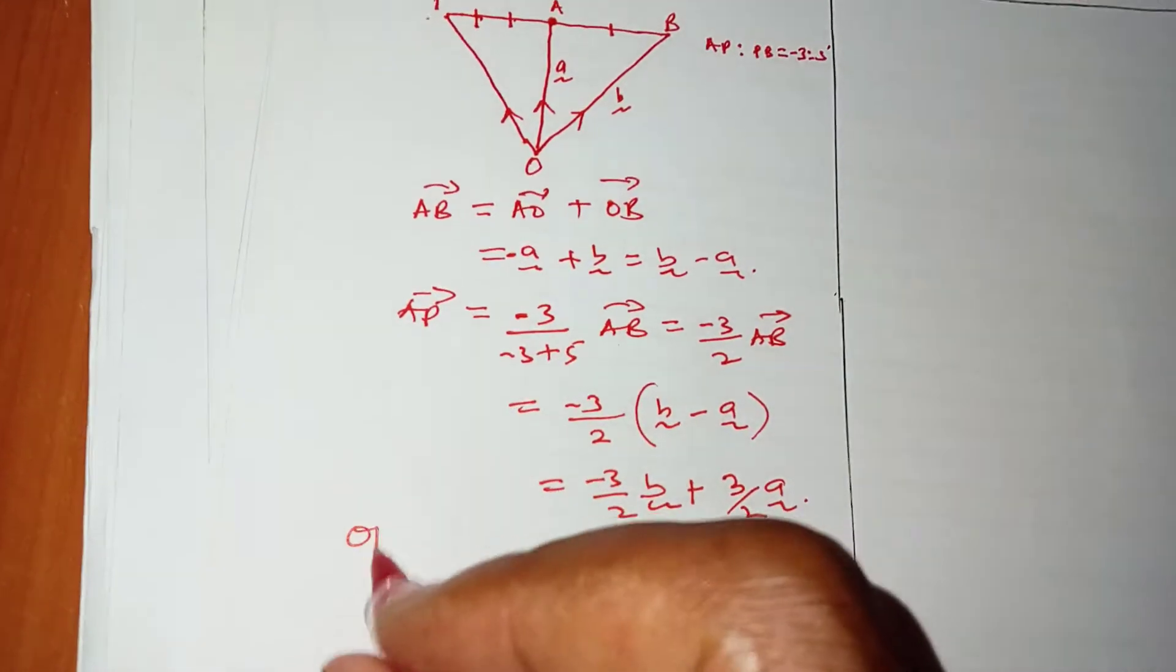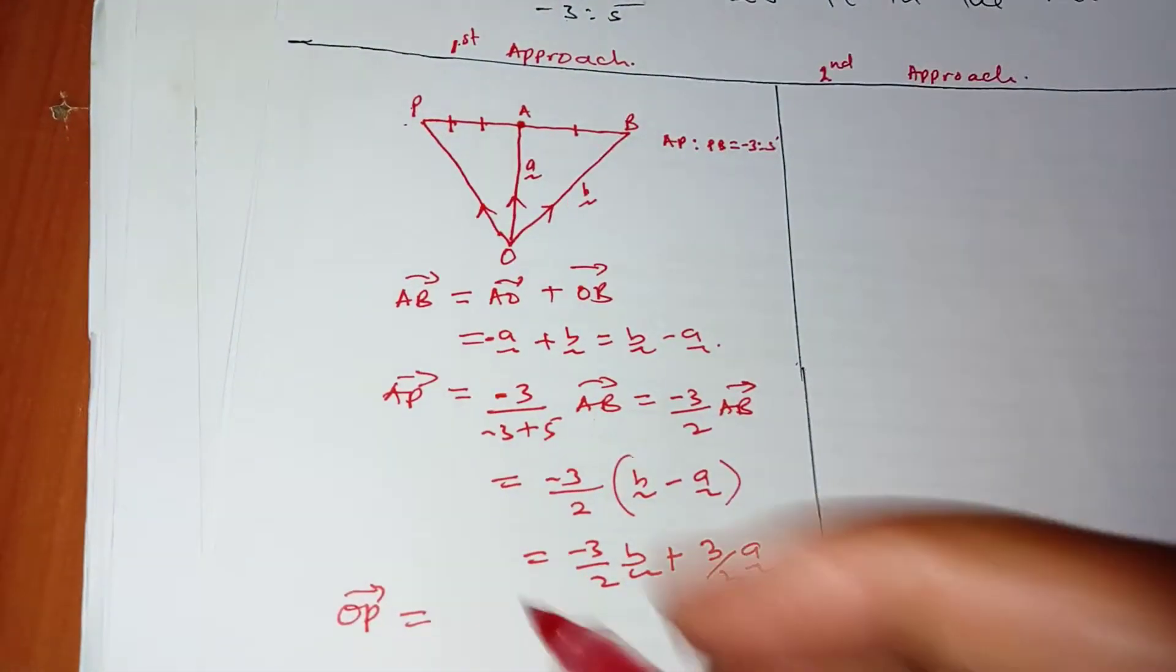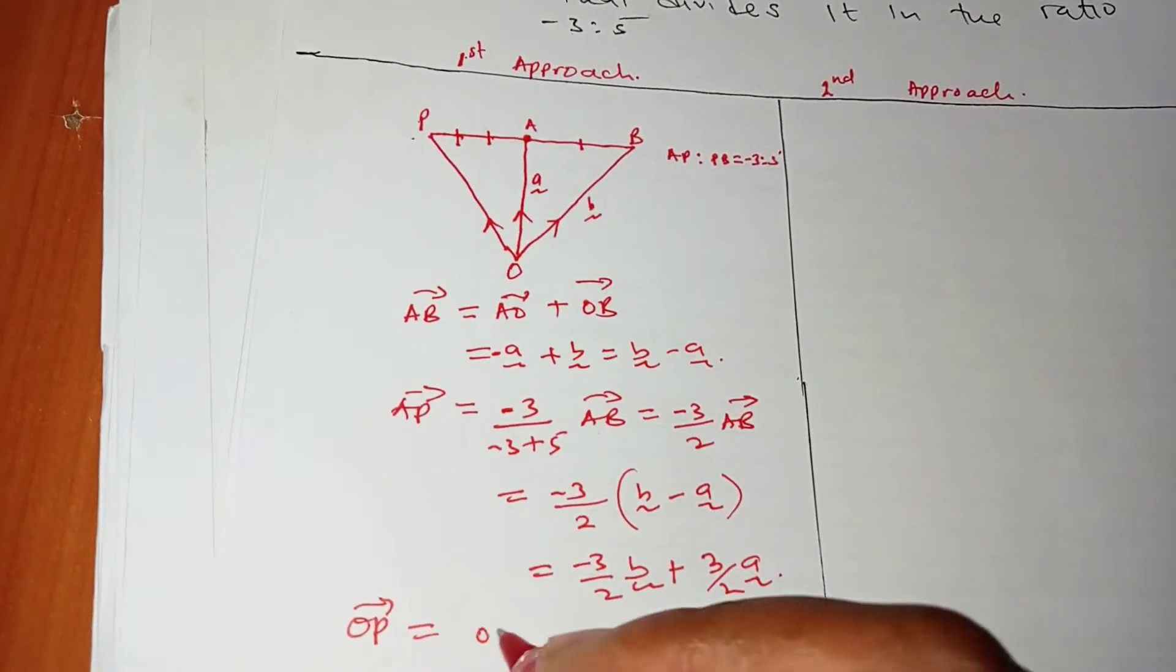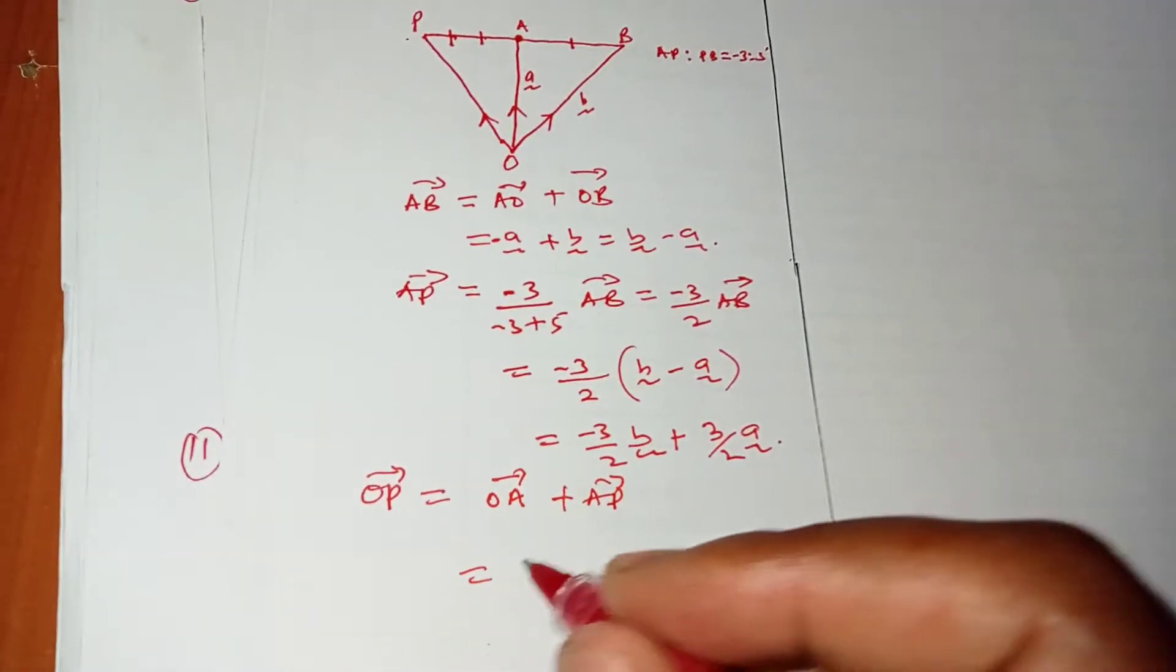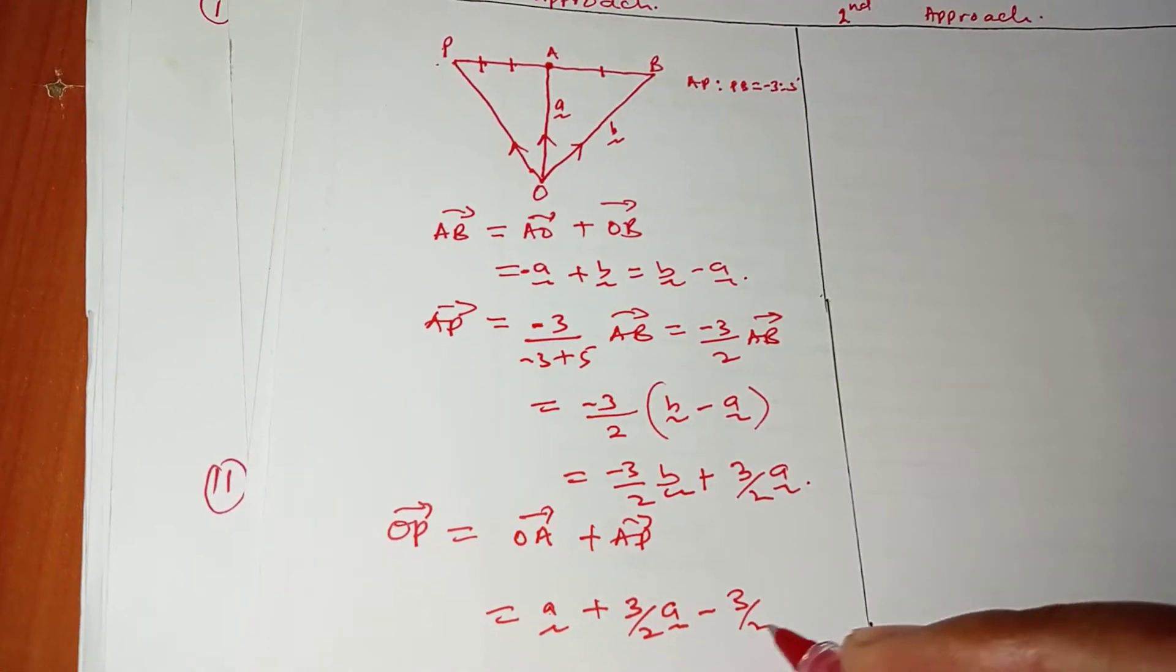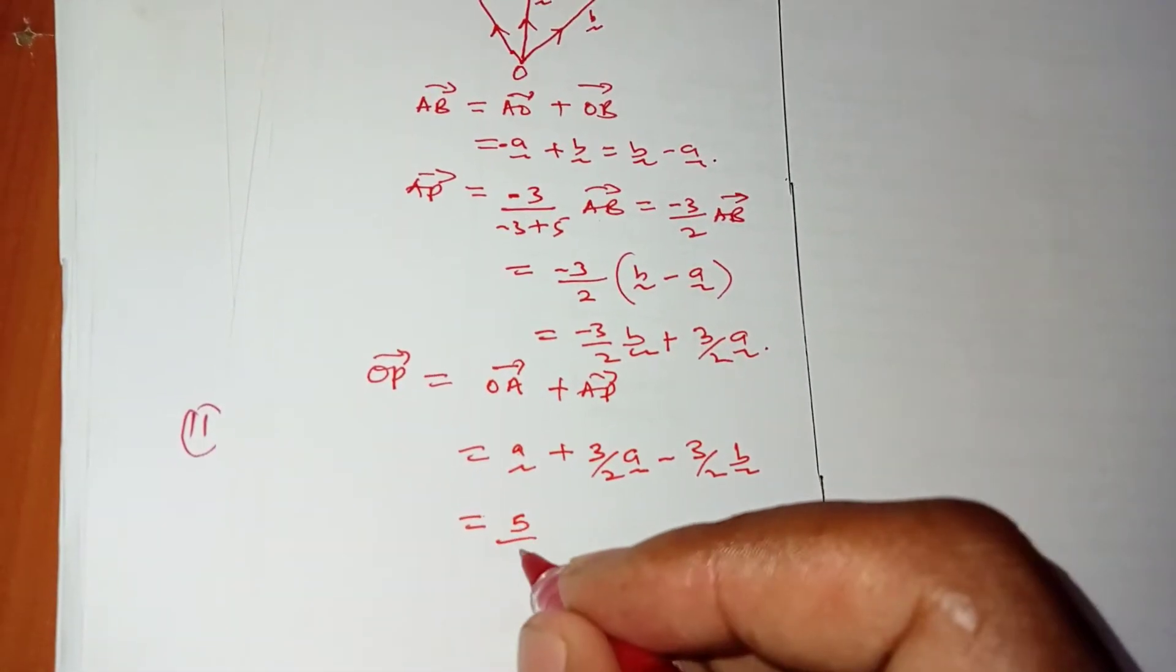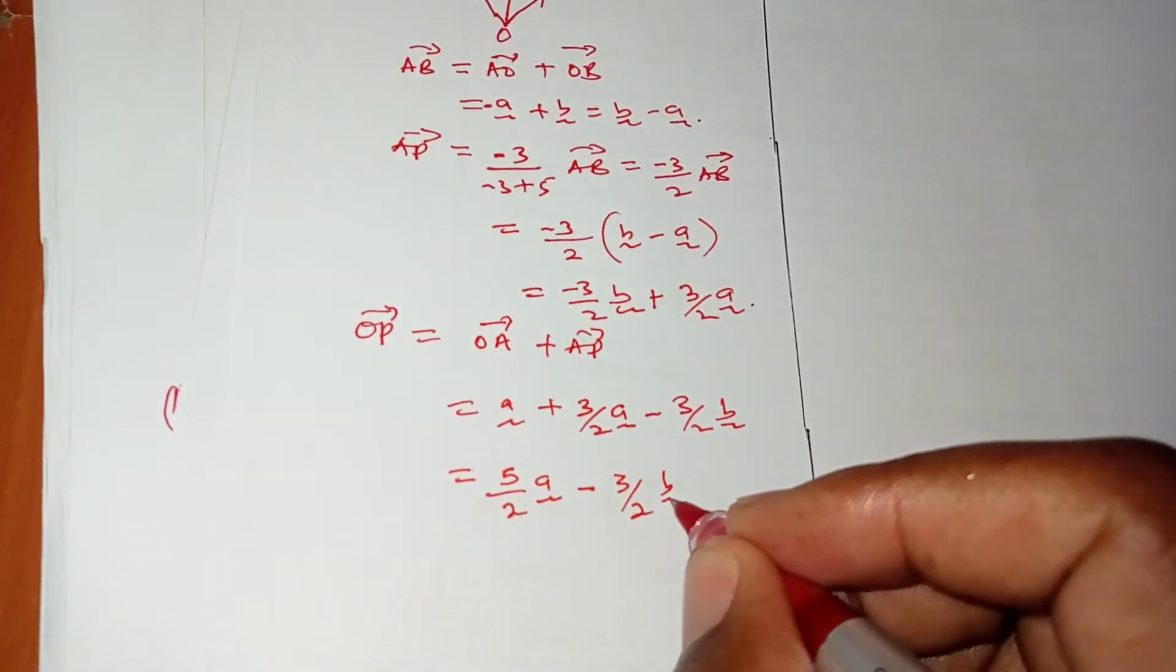How do you get OP? OP equals OA + AP. We are lucky because we already know what AP is. My OA is A, and my AP is this one here. When you simplify this, you're supposed to get 5/2·A then -3/2·B.